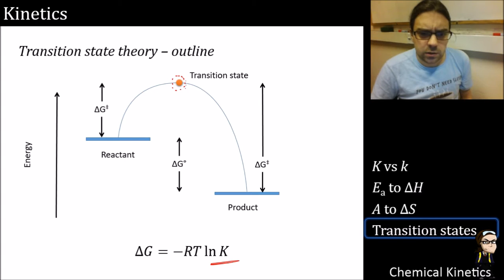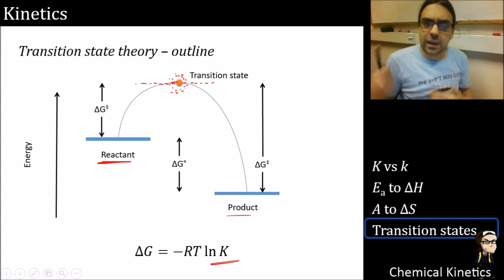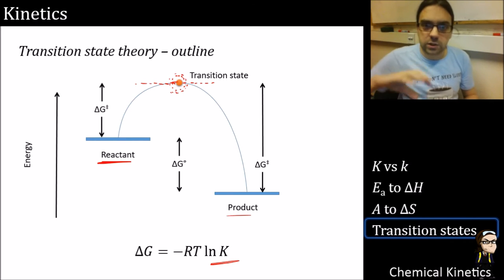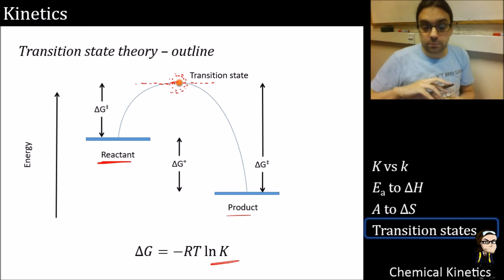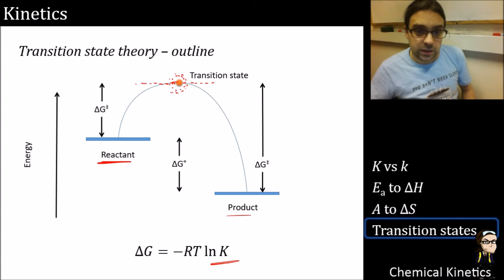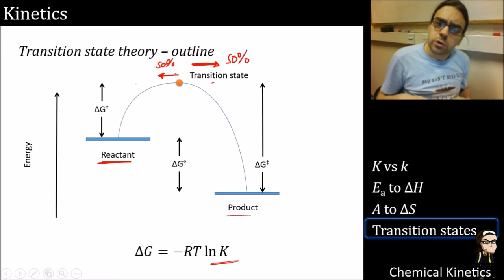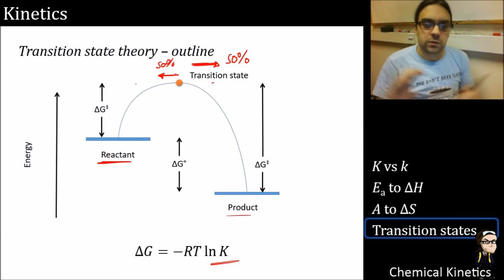What we're interested in is the transition state - we set up an equilibrium between the reactant and that high-energy species at the top of the barrier, not the product. The transition state is still a physical entity with energy associated with it. A reactant converts to a stretched, strained, high-energy form and then relaxes down to the product. Crucially, once a molecule hits the transition state, it has a 50% probability of going forward to product and 50% of returning to reactant.